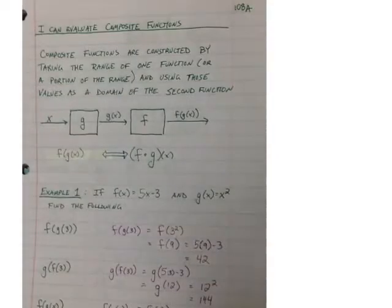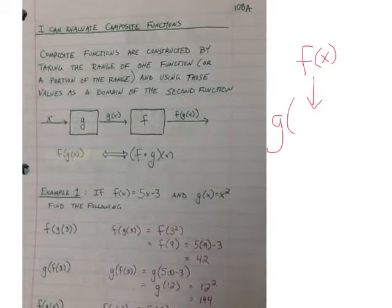A composite function is when you take one function and plug it in to the variable of another function. More technically, you're taking the range of g and plugging that range into your rule f. And that gives you f of g of x.